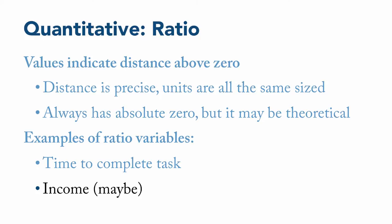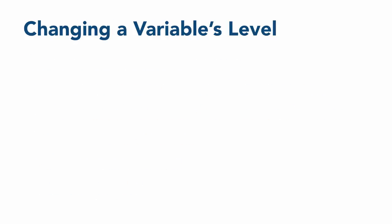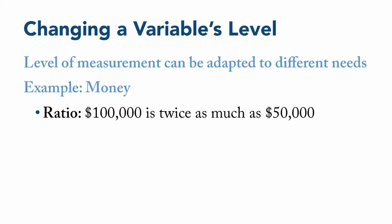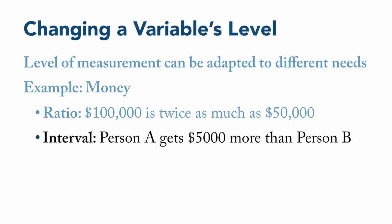A variable is nearly always able to be measured, analyzed, or interpreted at more than one level of measurement. And you can move back and forth between levels as best suits your purposes. To look at money again, any of the four levels of measurement may apply. We usually think of income as a ratio level variable. So $100,000 is twice as much as $50,000. That's pretty easy. But it's also true that income can be treated as an interval level variable. For example, person A might make $5,000 more than person B. We don't know what the absolute values are, and so we can't form a ratio between the two. But we can say exactly how far apart they are.